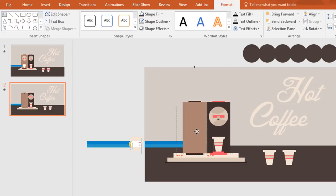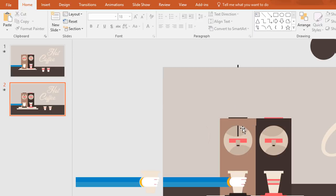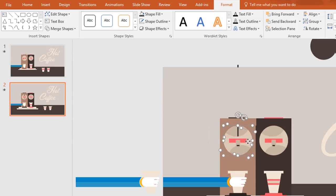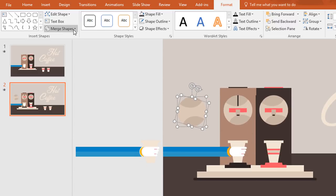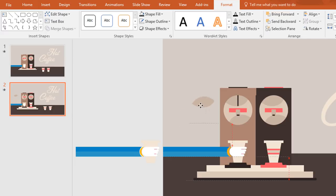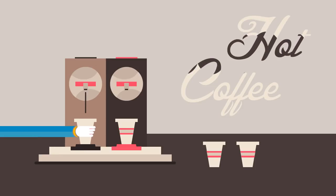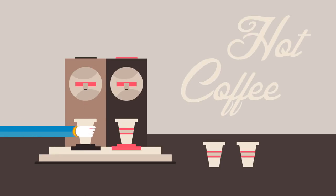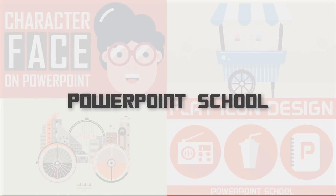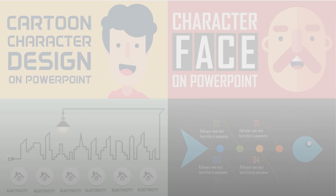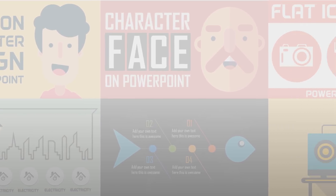Then duplicate this rectangle and place it over the previous one, and decrease its height to cover the upper part. Now select these two shapes, press Ctrl+D to duplicate and place over here. Now from merge shape select fragment, and delete the lower parts. Then just place this one over here and we are done. You can download this template for free — I have given the link in the video description. If you enjoyed this video make sure you like and subscribe to our channel and don't forget to share with your friends. Hope to see you in the next tutorial, thanks for watching.